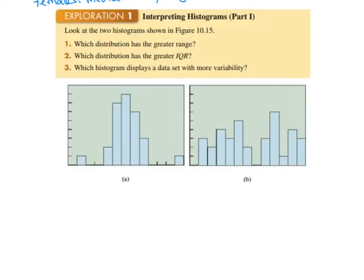Here are two histograms. Basically, they show frequency diagrams. We want to answer a few questions. Which distribution has the greater range? Well, first of all, I have to assume that the units on the x-axis are identical. If they aren't, I can't answer the question. So let's consider the two histograms.